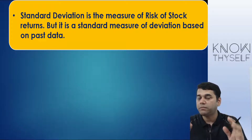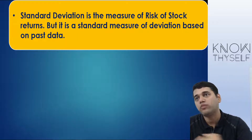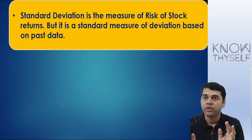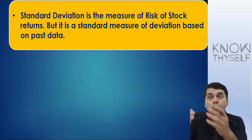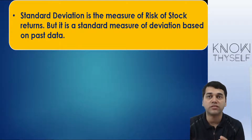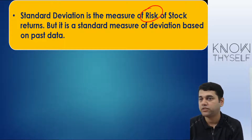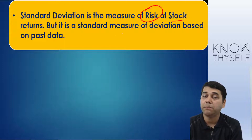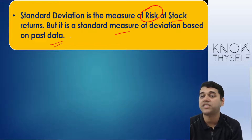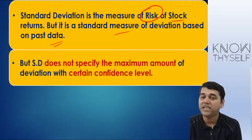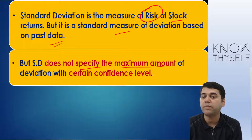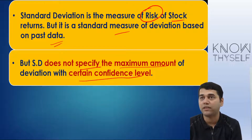Knowing the maximum potential loss means the moment that incident happens, I will square off and come out, so I save 80 lakhs. So value at risk tells you how much risk there is. The standard deviation is the measure of risk in portfolio management — but it is based on past data and does not specify the maximum amount of deviation at some confidence level. It will not tell you how much maximum amount you might lose.